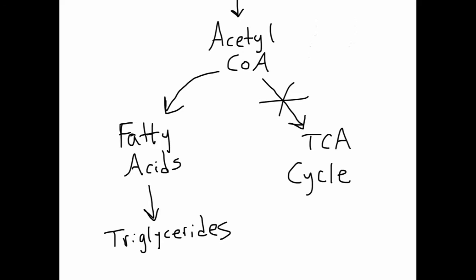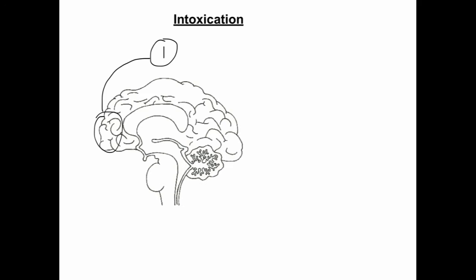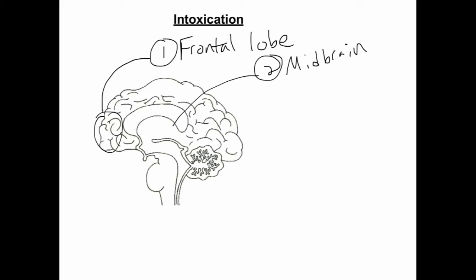Alcohol affects the brain in a predictable pattern. The first area, which is the most sensitive and first to be sedated, is the frontal lobe, resulting in impaired judgment and reasoning. The second area to be affected is the midbrain, causing alterations in speech and vision. The third area to be affected is the cerebellum, where cells responsible for voluntary muscle control are located, involved in speech, hand-eye coordination, and limb movement, typically resulting in the stagger and slur seen when intoxicated.